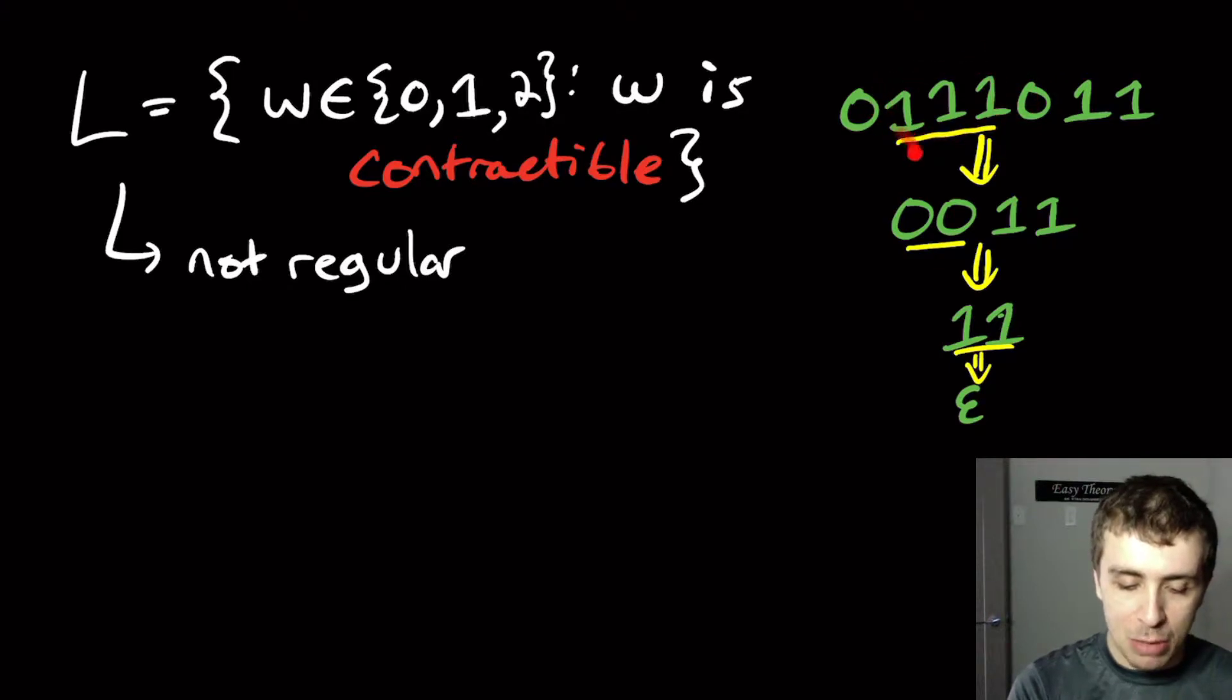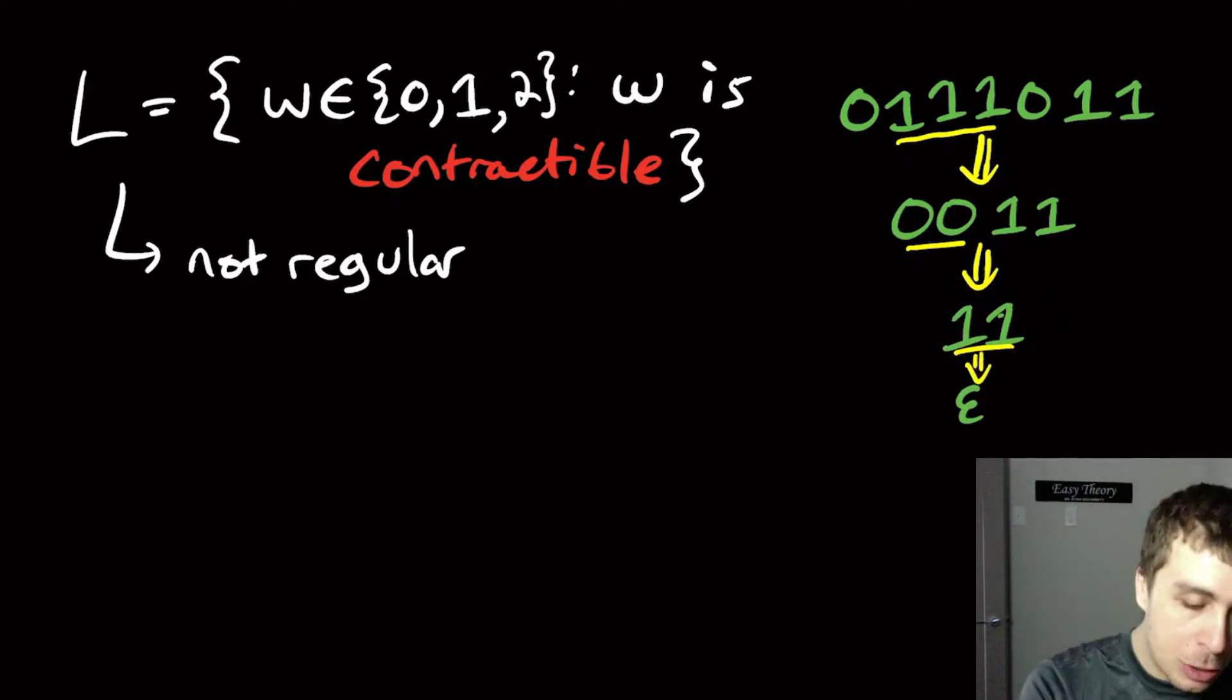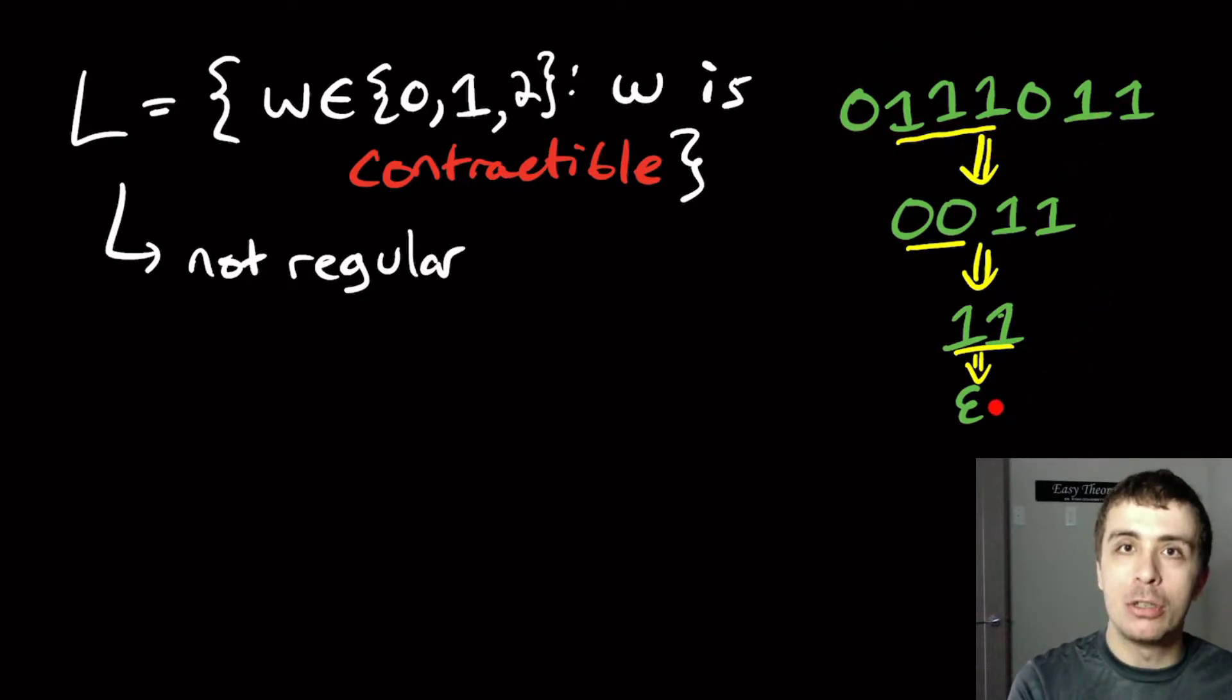So here, we're going to take these three ones, I've underlined them here, and we're going to delete them from the string. Then we'll result in the string zero, because of this zero at the front, then a zero here, then two ones at the end. So then we have two zeros here, and then two ones. Then we can take out either one of them. I took out the 00 here, then we took the 11 out, and then we finally got the empty string. So that string right there, because we were able to contract it all the way to the empty string, then it's contractible.